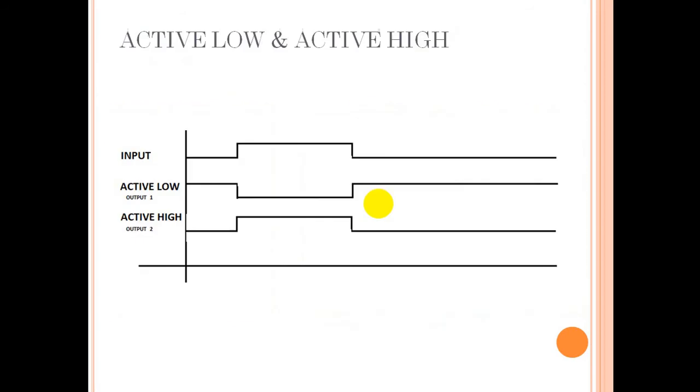We have active low and active high PLCs. For active low, when your input is going from low to high, your output is always high. But as soon as your input is high, output goes low. Vice versa for active high: active high follows the input. It's always off, and when the input goes high, output goes high.